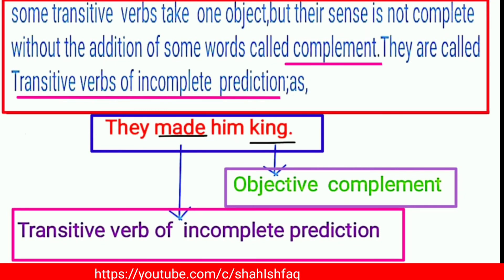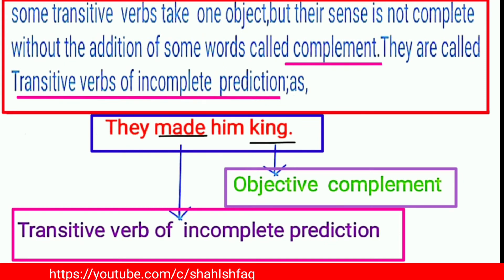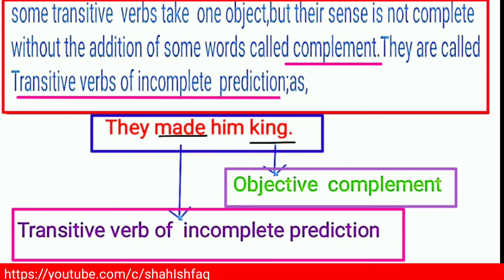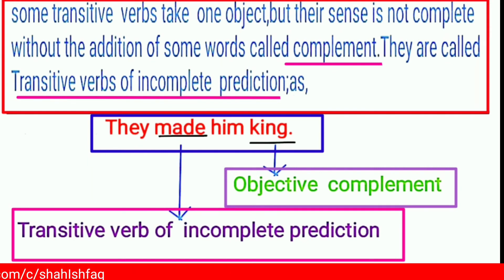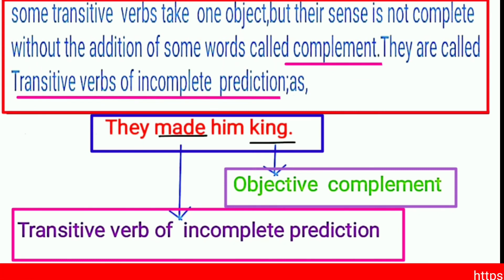Some transitive verbs take one object but their sentence is still not complete. Without the addition of some words called a complement, they are called transitive verbs of incomplete predication. That means some transitive verbs require an extra word to give a complete sense to the sentence.